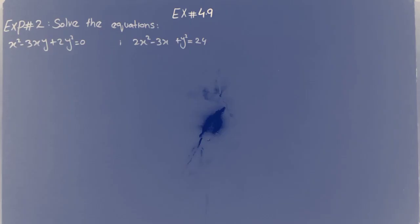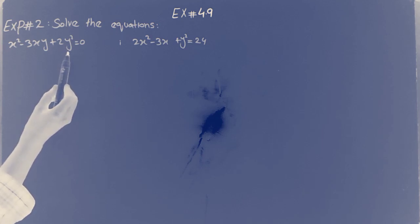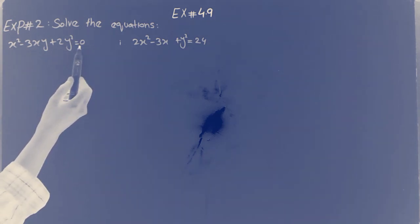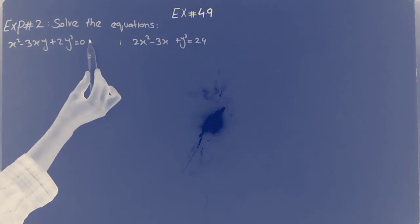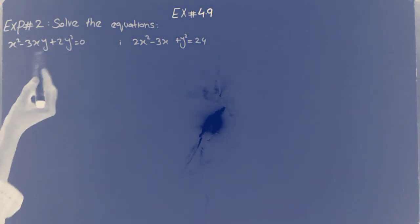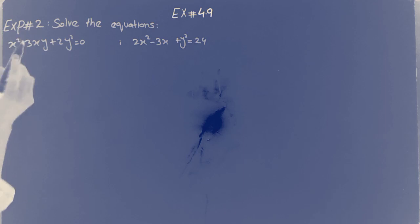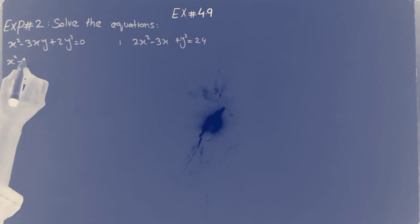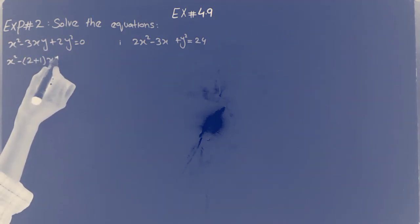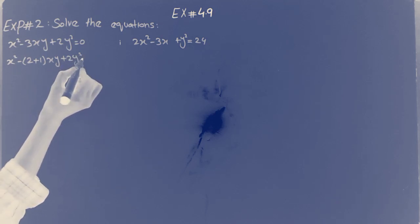Now we have example number 2 — we will solve a system of two equations. First, we form a homogeneous equation equal to 0. We make factors: x-square minus 3xy plus 2y-square equal to 0. Factoring: x-square minus 2xy minus xy plus 2y-square equal to 0.